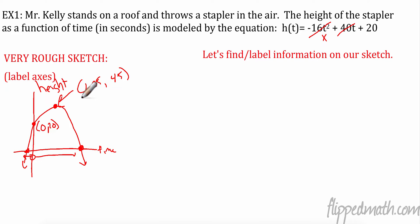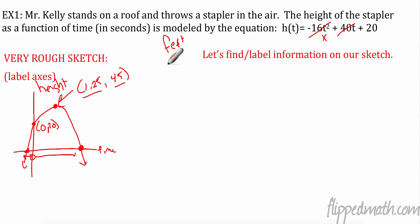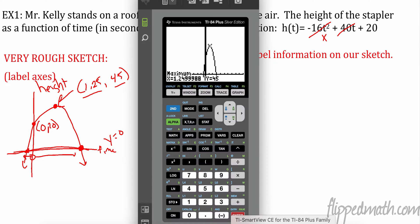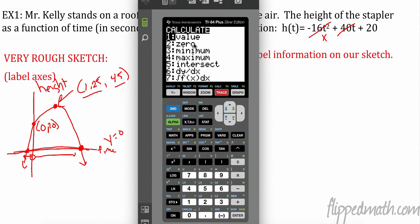That means at 1.25 seconds, the height is 45 feet — that's the maximum. Now let's find the x-intercept (when the stapler hits the ground). Go to Second, Calc again and choose number two: Zeros. There are two zeros, but we only care about the positive-time one.